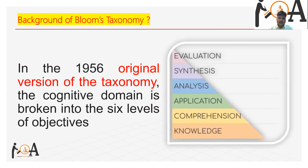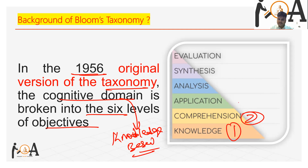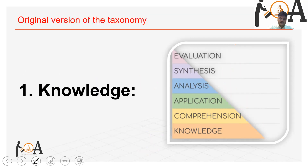In the 1956 original version of the taxonomy, the cognitive domain is broken into six levels of objectives. The first is Knowledge, the second is Comprehension, the third is Application, the fourth is Analysis, the fifth is Synthesis, and the sixth is Evaluation.